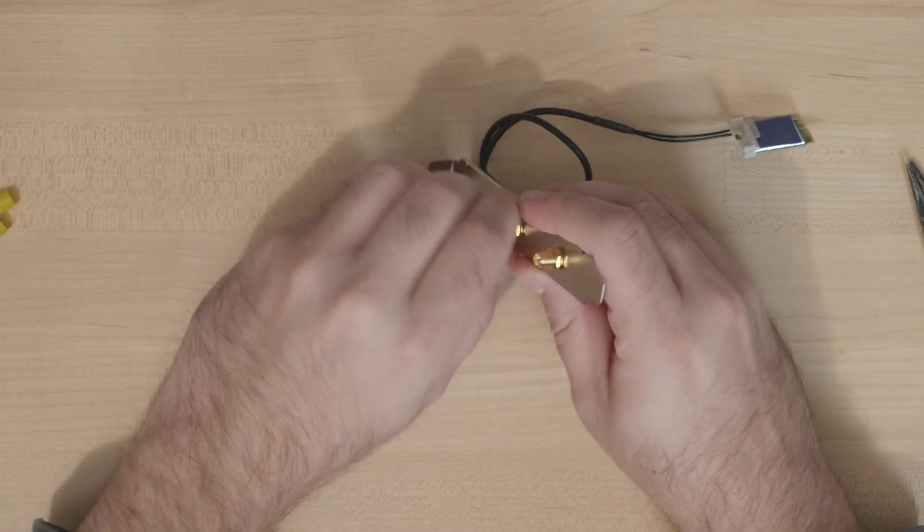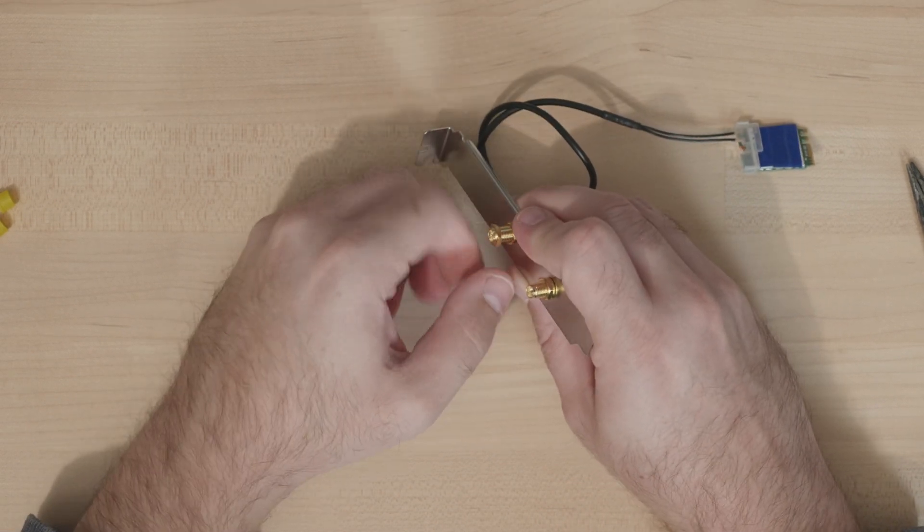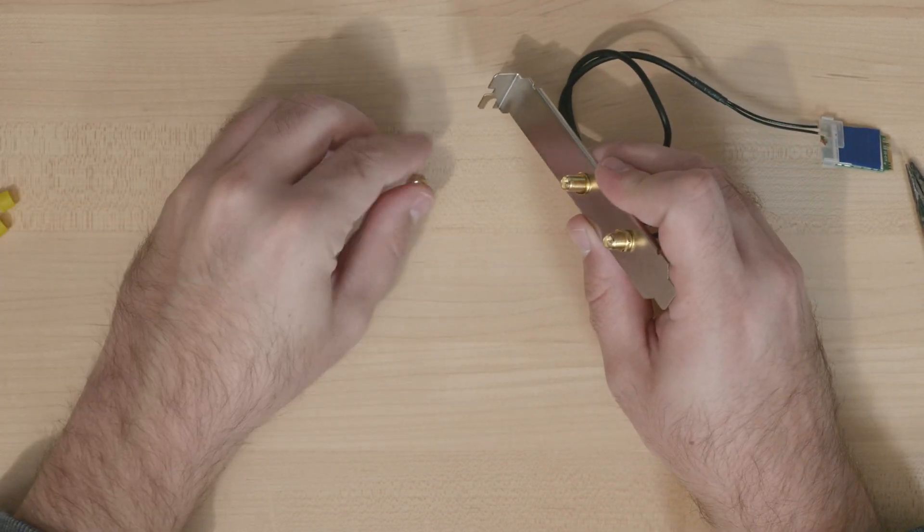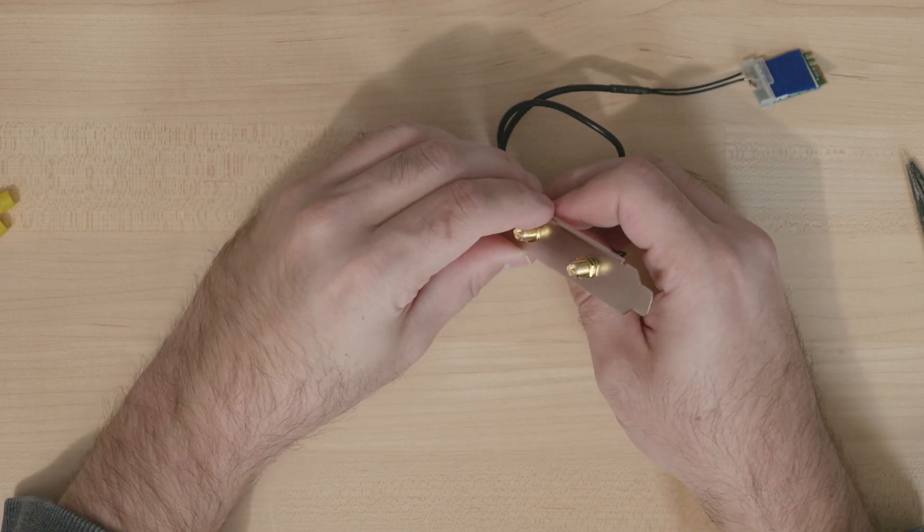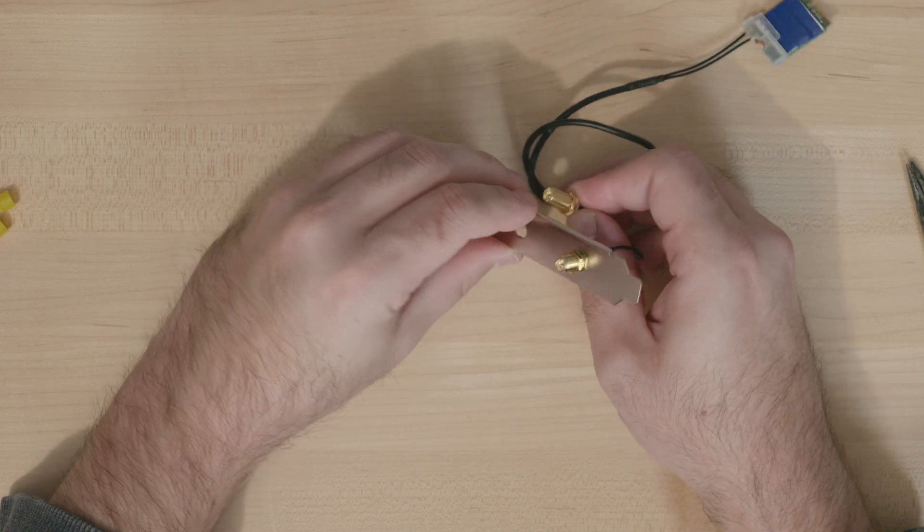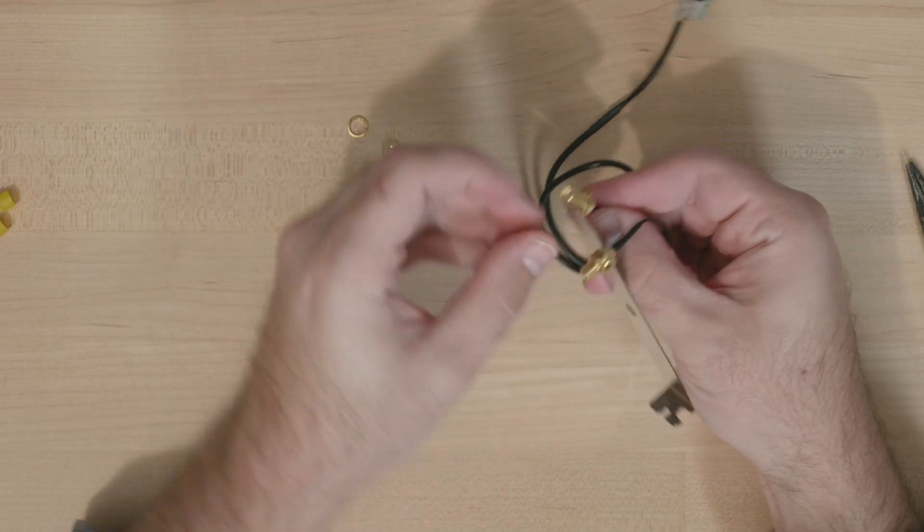If you don't have any holes in the I/O shield for the antennas, but your motherboard still has a slot for a Wi-Fi card like this, then you'll just need to use that as it came in this kit.